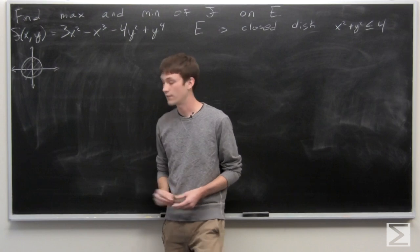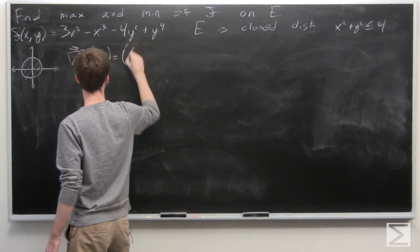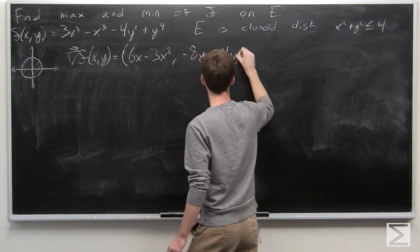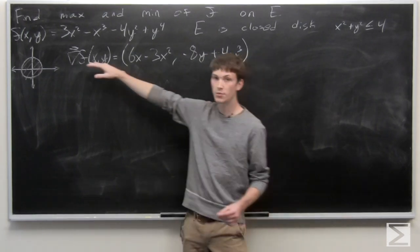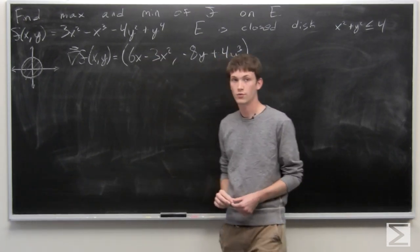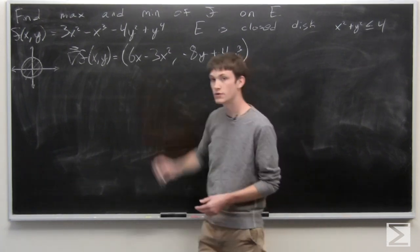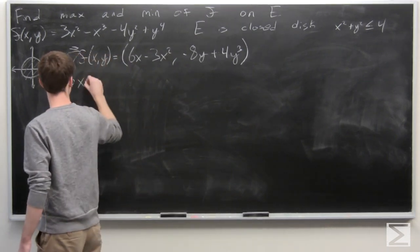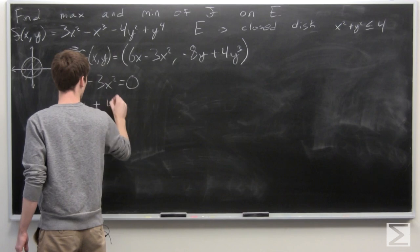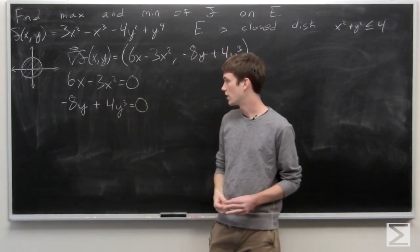First, we'll take the gradient vector of our function. Taking the partial derivative of f(x,y) with respect to x, we get 6x minus 3x squared. And the partial derivative of f(x,y) with respect to y is negative 8y plus 4y cubed. We want to set this equal to zero, so we'll set the components equal to zero: 6x minus 3x squared equals zero, and negative 8y plus 4y cubed equals zero.